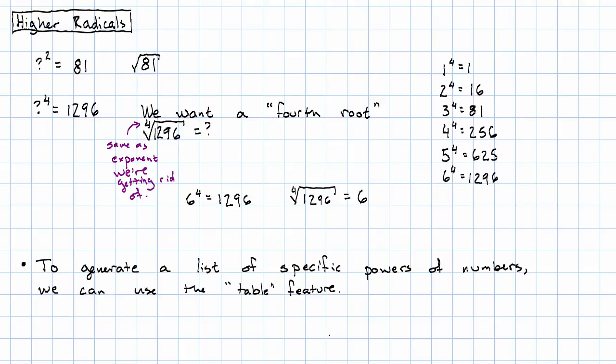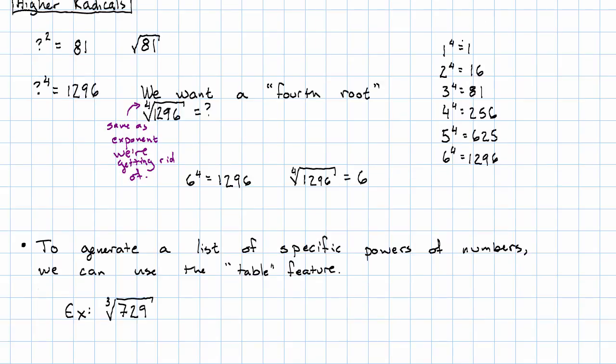If we want to generate a list of specific powers of numbers, we can use the table feature. For example, suppose we wanted to take the third root of 729. We want to say what number to the third power is 729.